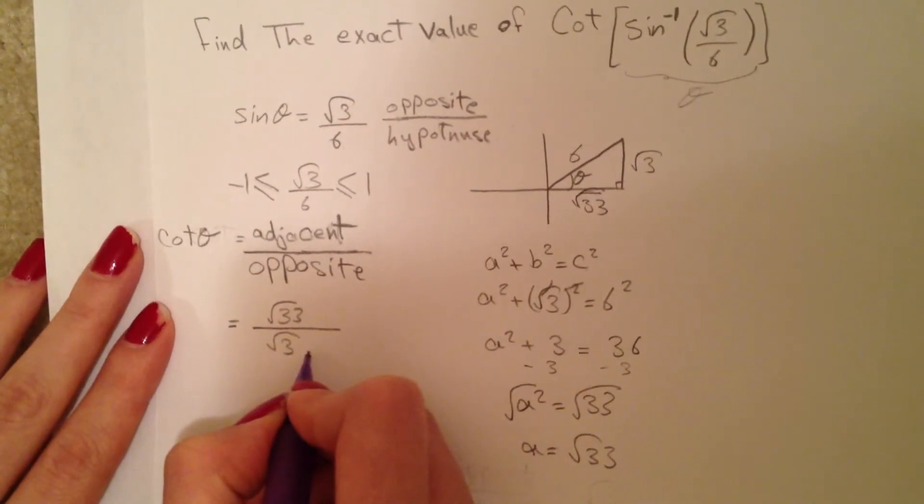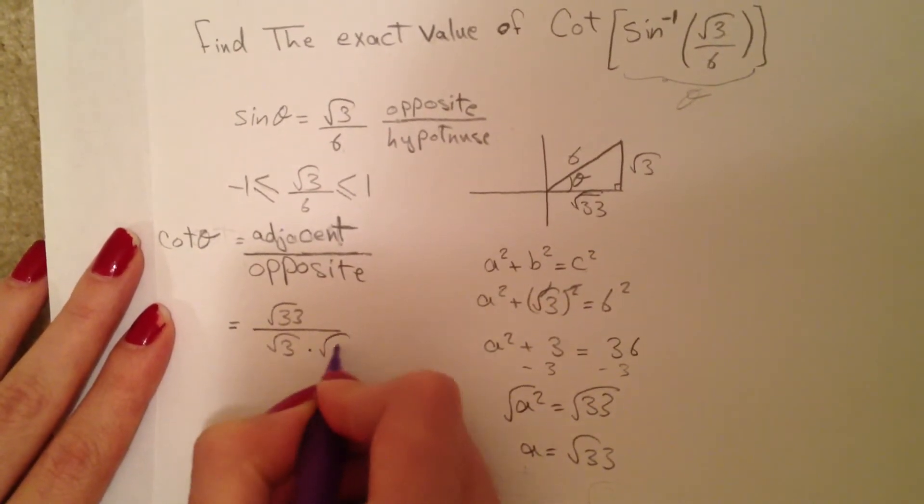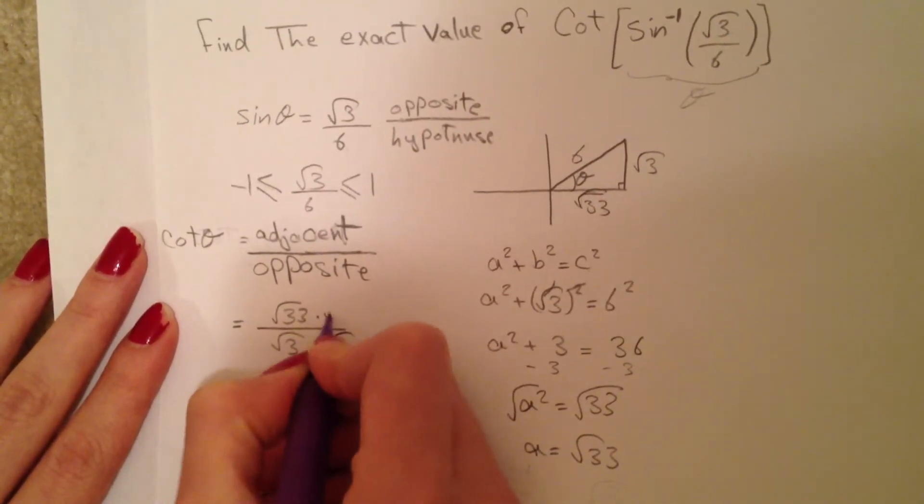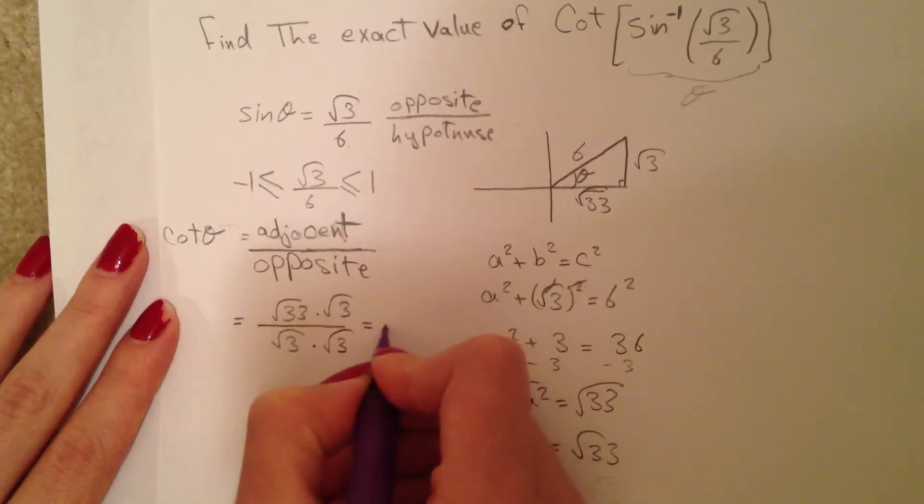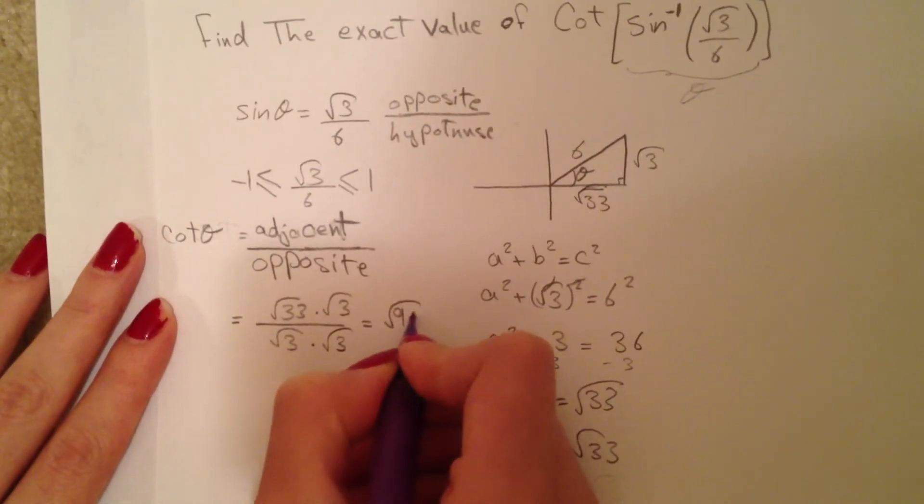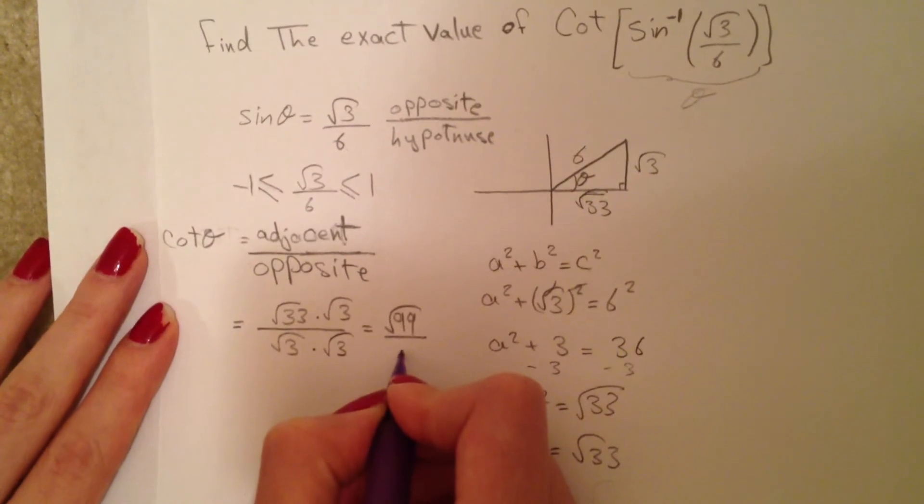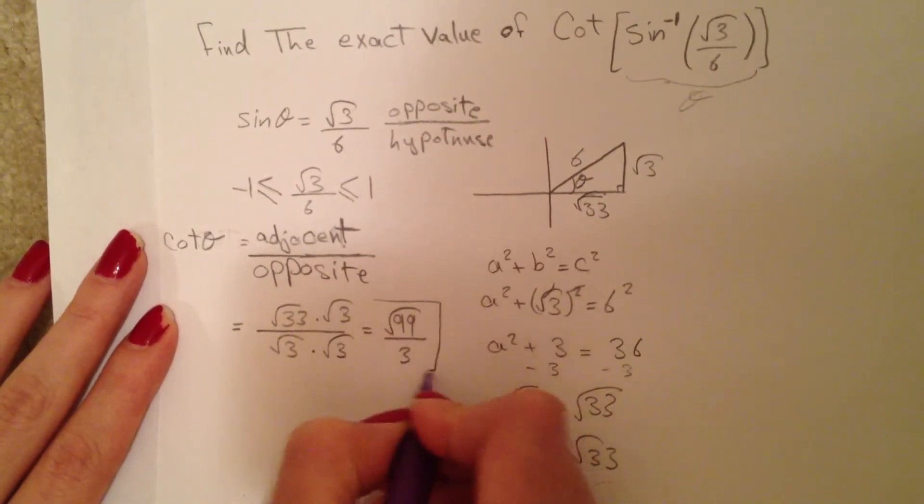To take the square root from the bottom, I multiply by √3. So I have √99/3. Here is the answer.